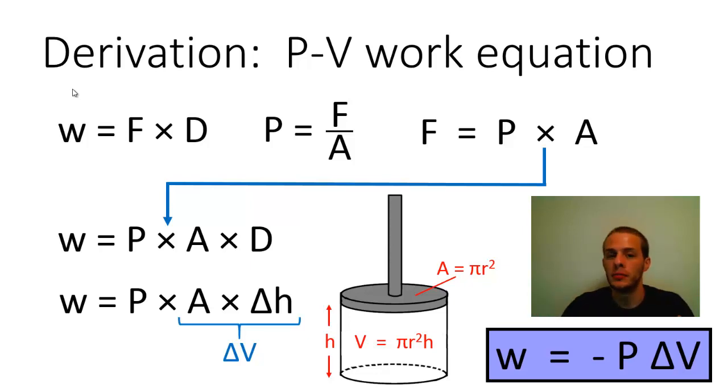So in an expansion, work is going to be negative because it's being done on the surroundings. And during a compression, work is going to be positive because that work is being done on the system.